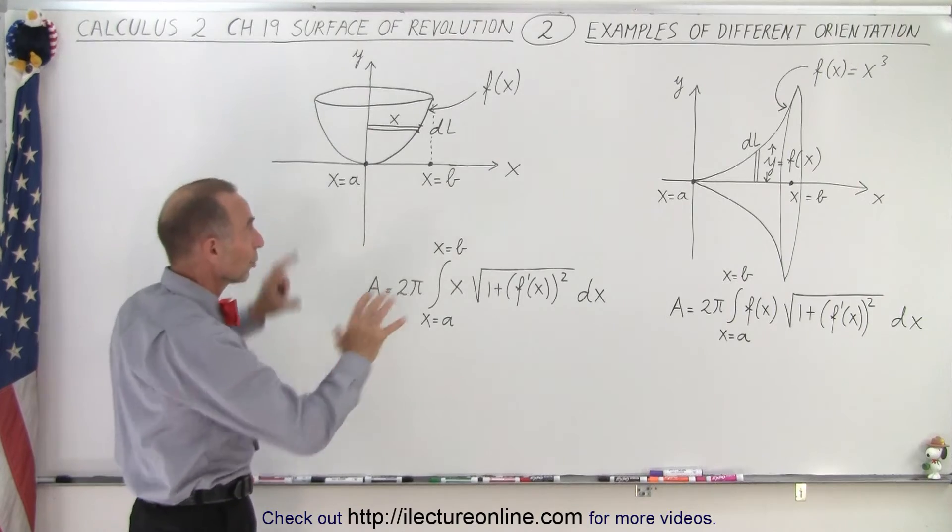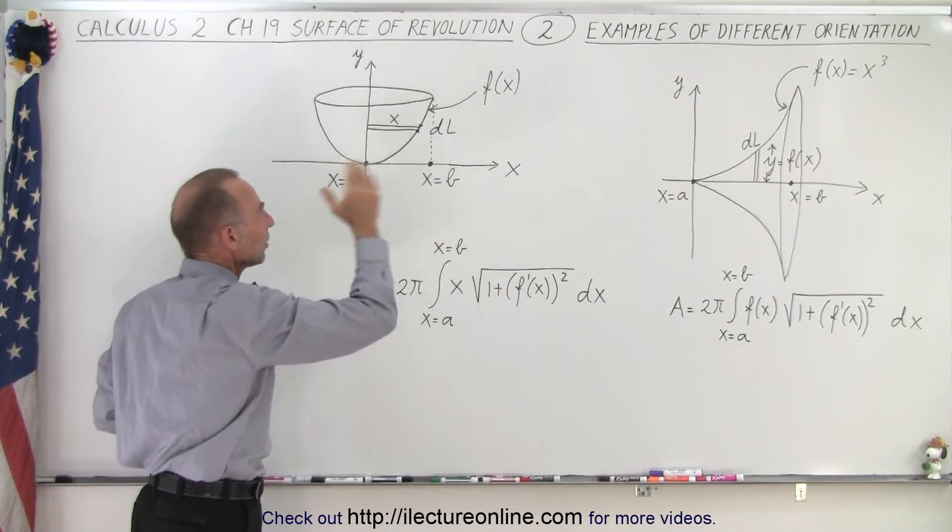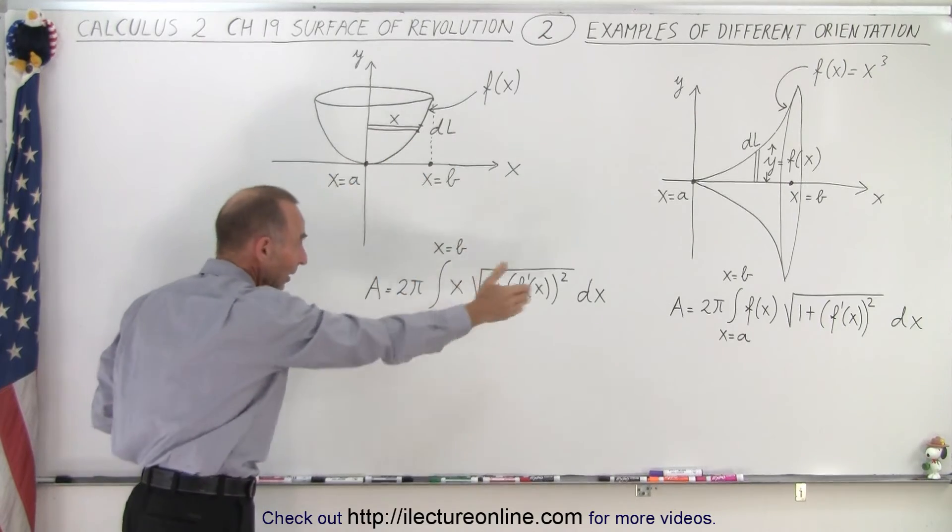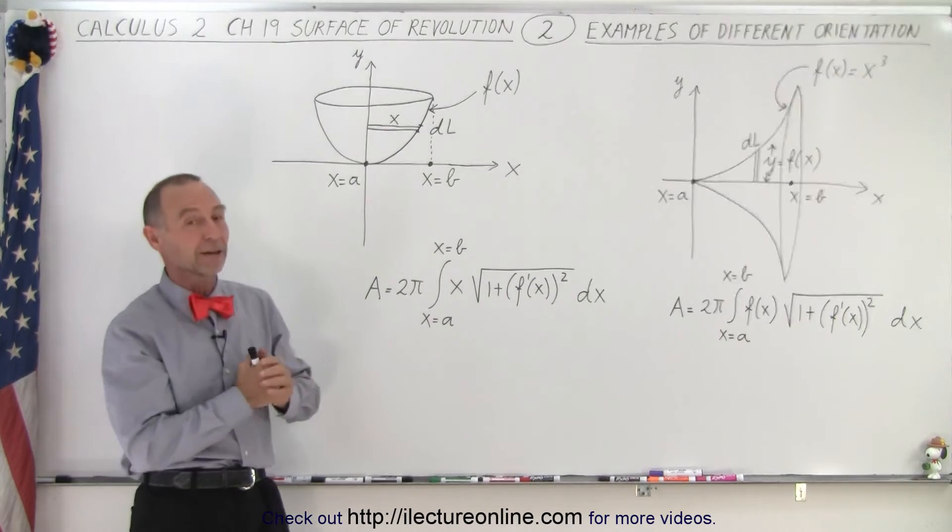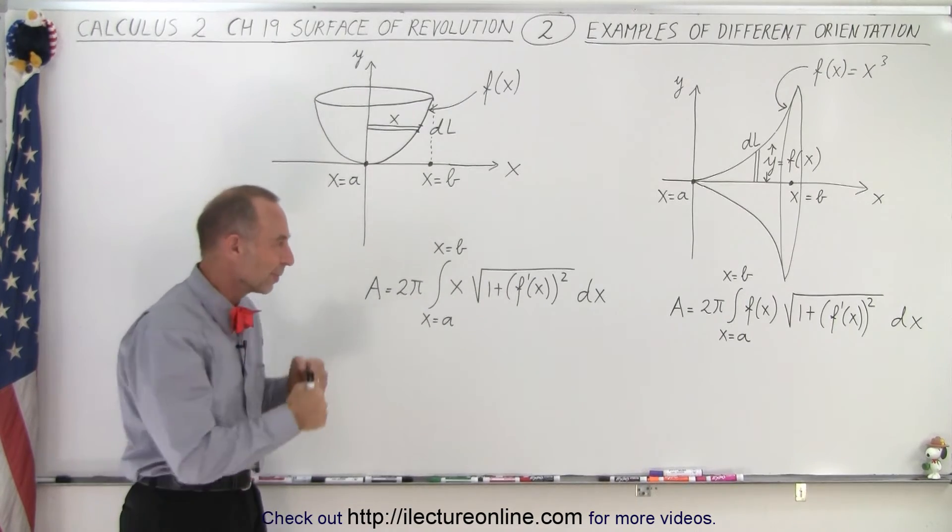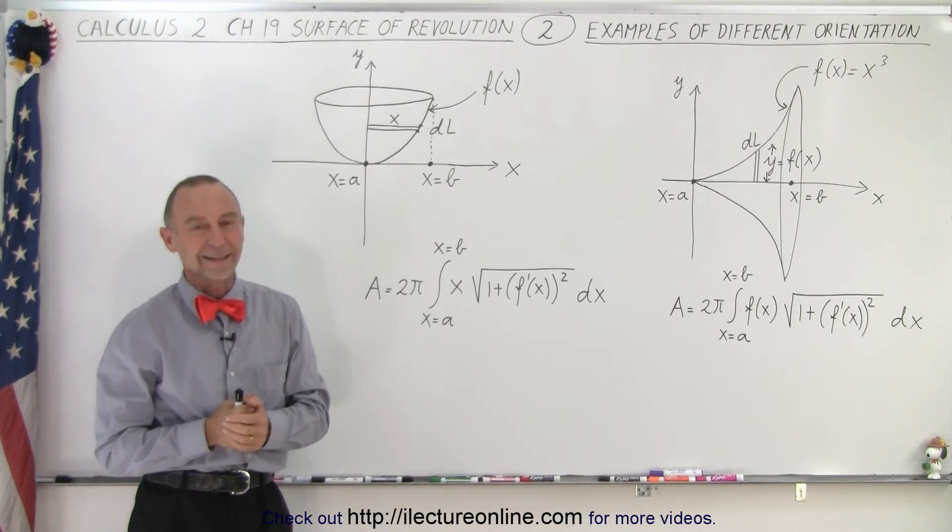So you can see that it doesn't matter which way it's oriented. You can always find a way to revolve around either the x-axis or the y-axis, and then you write it like this to find the area. So that's how it's done, and of course you're really anxious to see some examples of how that's actually applied, and we'll show you that on the next videos.